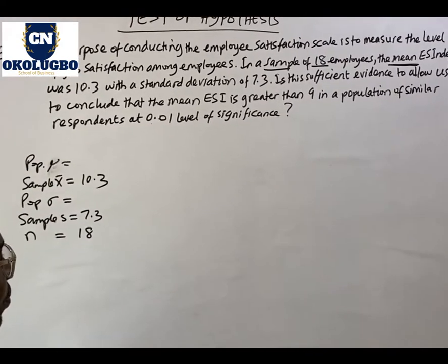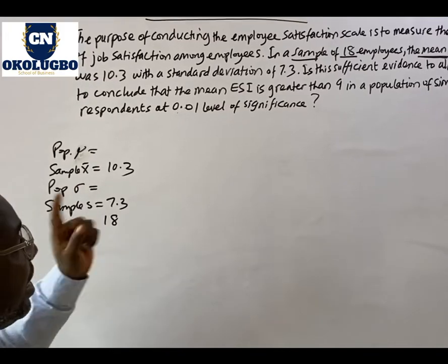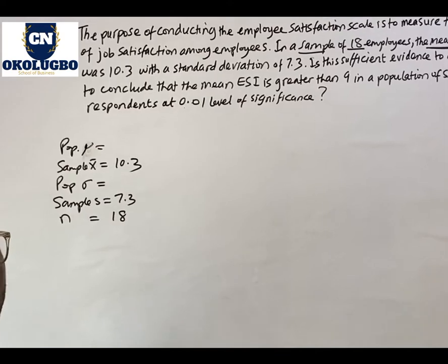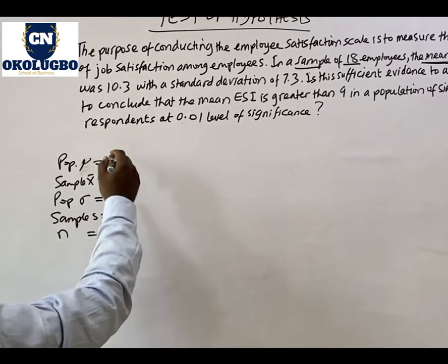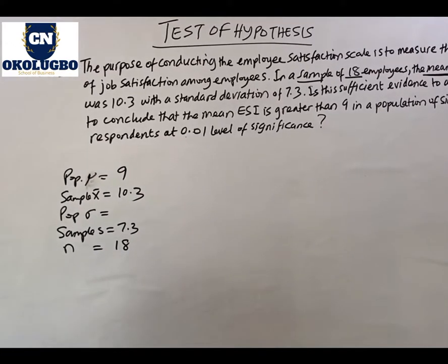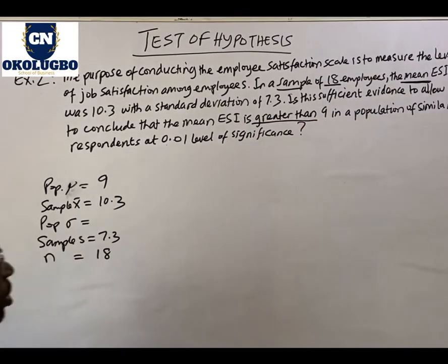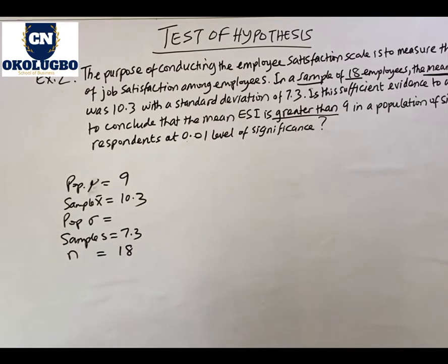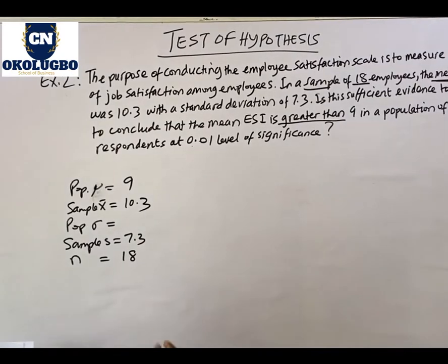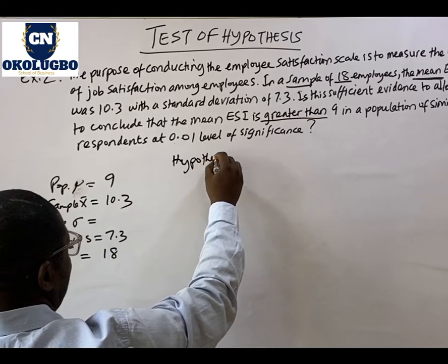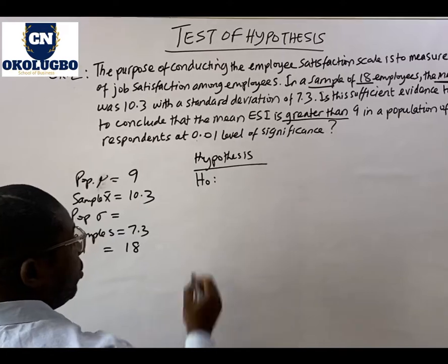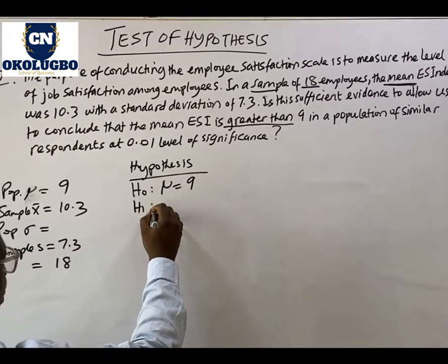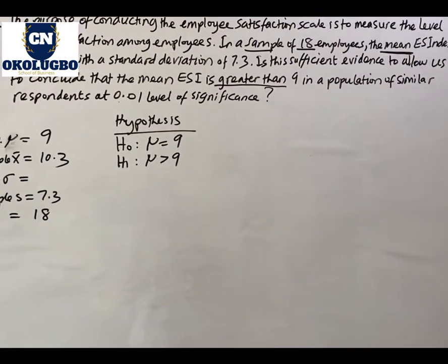Whenever you're given a standard deviation, it will normally be the sample standard deviation and follows the sample mean. The population standard deviation follows the population mean. The question is: is there sufficient evidence to conclude that the mean ESI is greater than 9 in a population of similar respondents? The value 9 is the population mean. The word 'greater than' tells us this is a one-tailed test — specifically a right-tailed test. So we state the hypothesis: H0: mean = 9, H1: mean > 9.